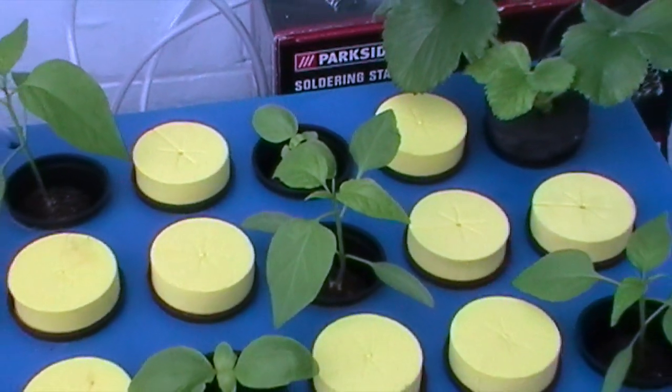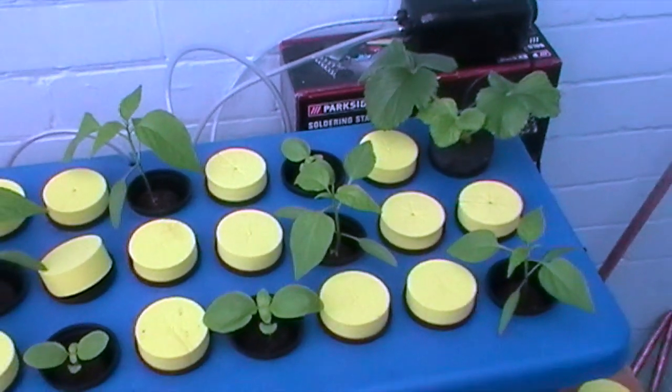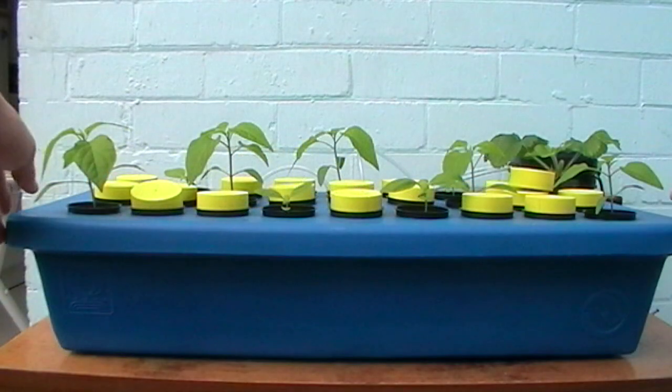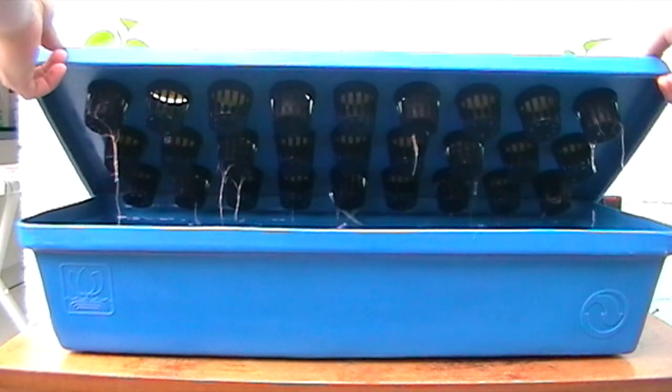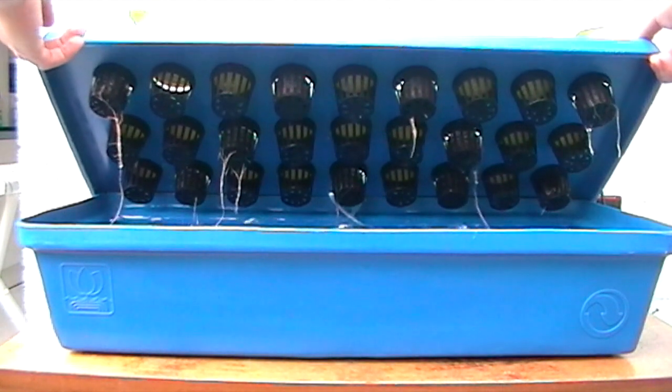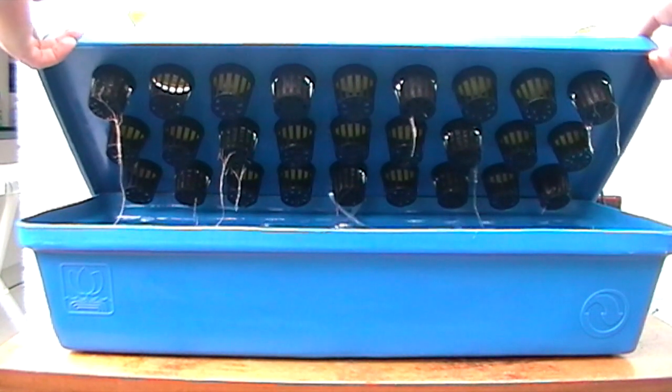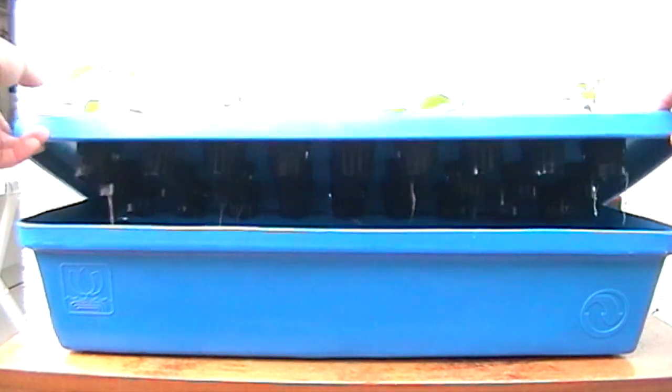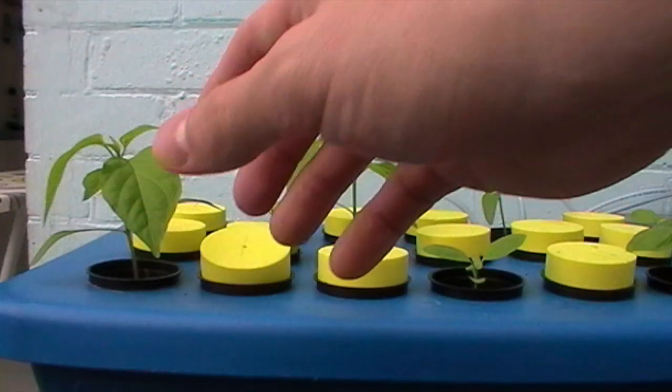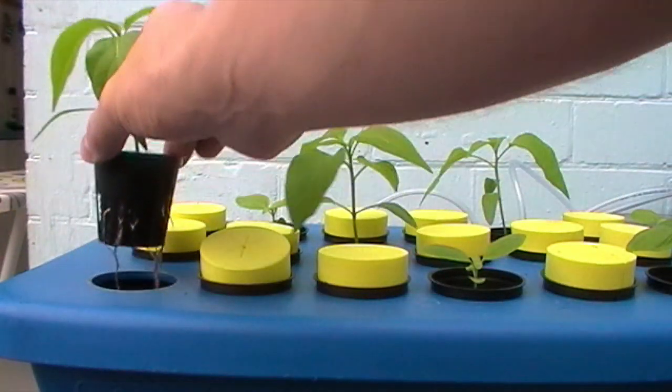The roots that have emerged from the propagation plugs are hanging down into the nutrient solution. They're looking healthy and white with no signs of rot. The leaves that have grown are green and show no signs of any deficiencies. Soon these seedlings will be ready to transplant into soil or a larger hydroponic system.